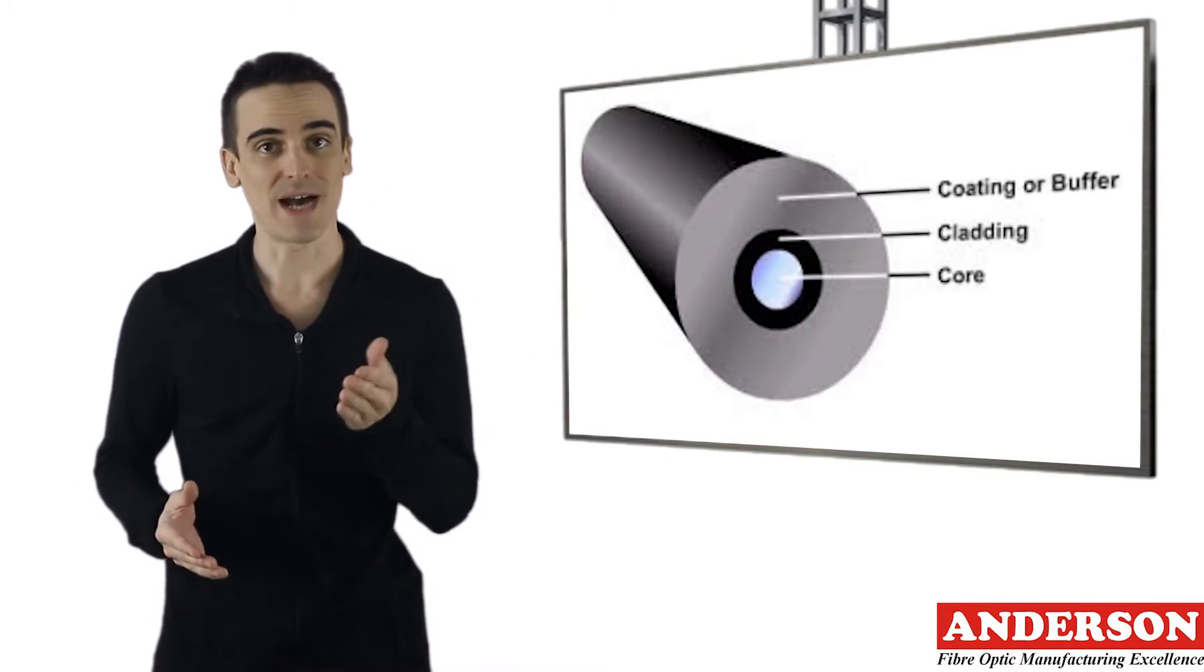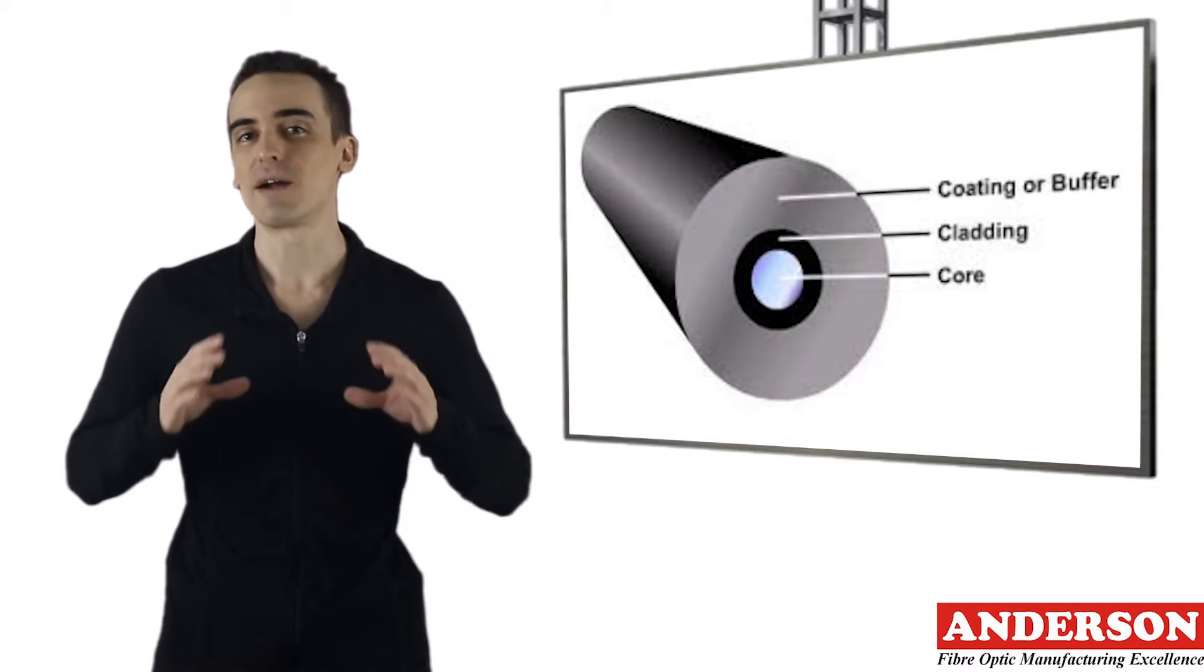The core is the inner part of the fiber which guides the light. The cladding surrounds the core completely.